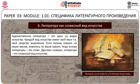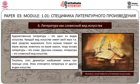Художественная литература – это один из видов искусства. Каждый вид искусства имеет свой язык, то есть своё средство выражения. Если музыка говорит на языке звуков, живопись на языке красок, тогда основа литературы – это слово. Литература – это словесный вид искусства. Писатель, поэт, драматург изображают жизнь при помощи слов, и этим отличается литература от других видов искусства.